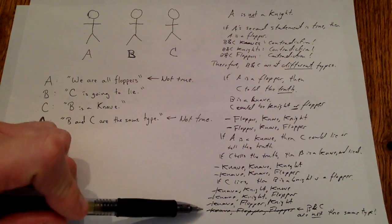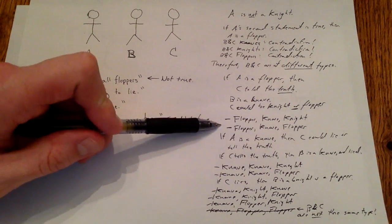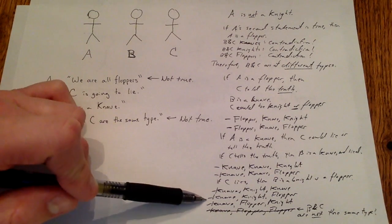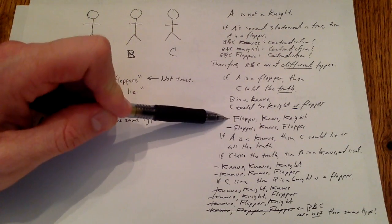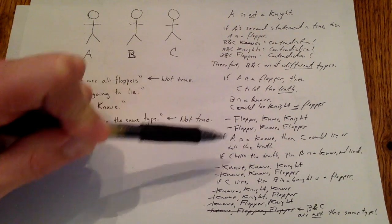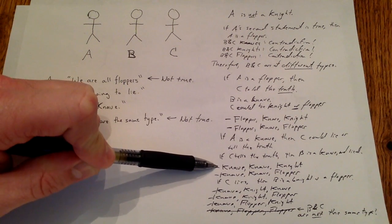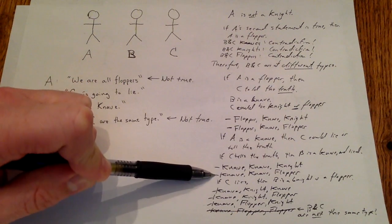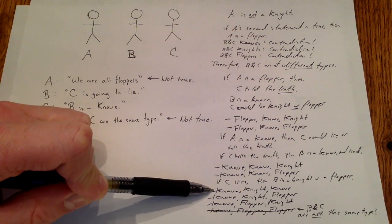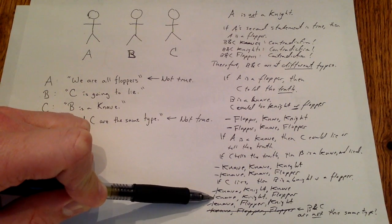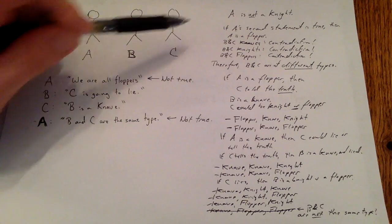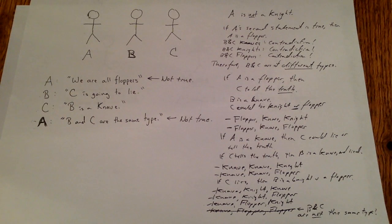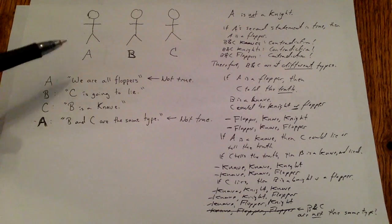So B and C are not the same type, and we end up with seven possibilities out of our original 27: flopper-knave-knight, flopper-knave-flopper, knave-knave-knight, knave-knave-flopper, knave-knight-knave, knave-knight-flopper, and knave-flopper-knight. Therefore, by using case analysis, we're able to evaluate all the possibilities for the three types of people.